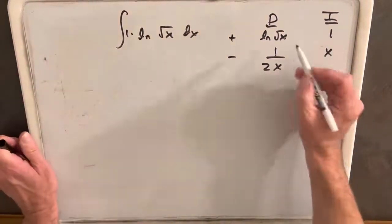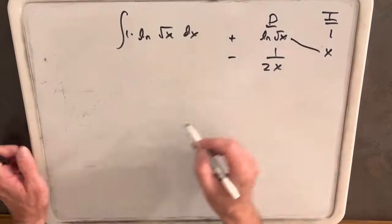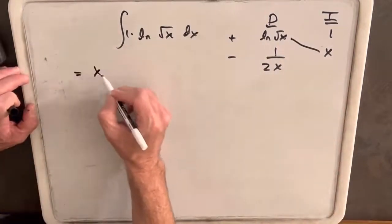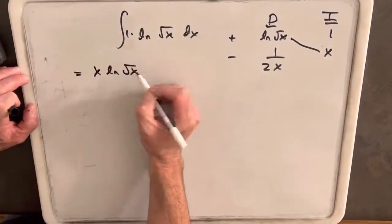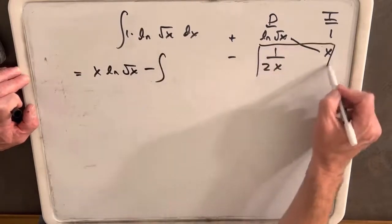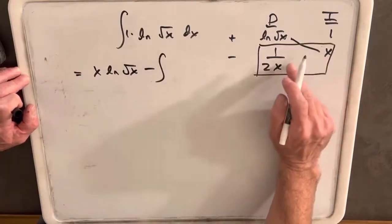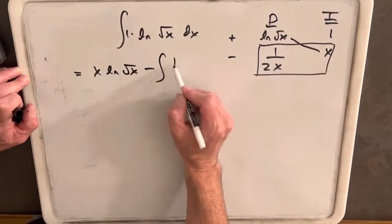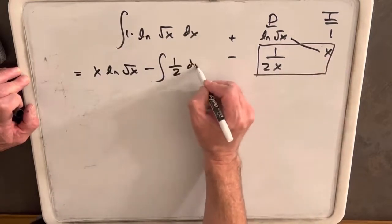So then for our answer, like we did earlier, we use the diagonal in our answer. So we'll have x ln square root of x minus the integral. This piece here is an integral, but x is going to cancel with x, and we're just going to have 1 half left here.